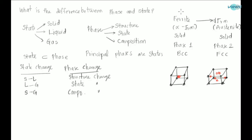This ferrite and austenite is an example of structure change. And now, let us see what is composition change.